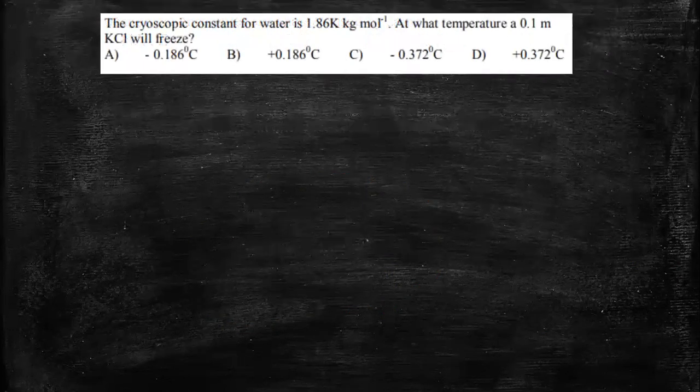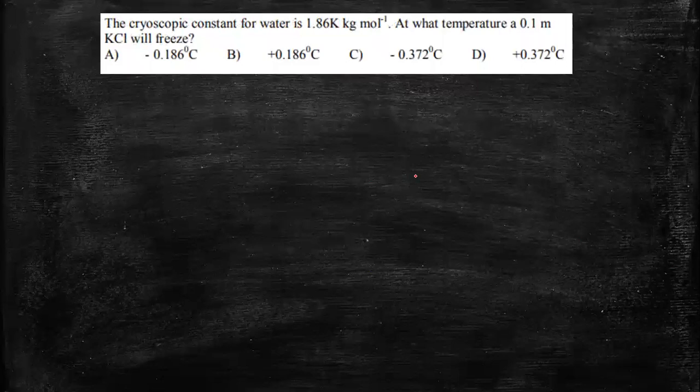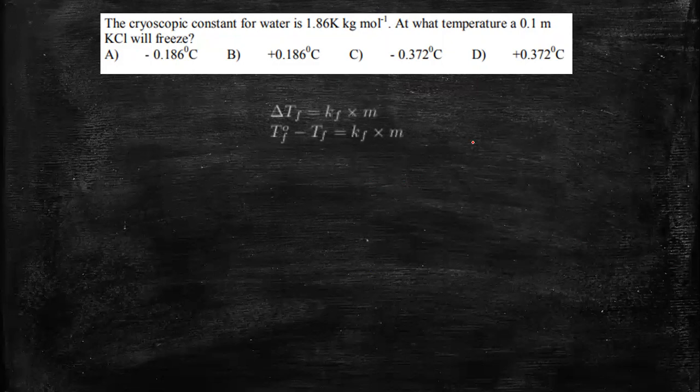Now let's move on to the next question. The cryoscopic constant for water is 1.86 K kilogram per mole. At what temperature will 0.1 molar KCl freeze? So initially, this is cryoscopic constant and we need to look at the particular formula delta Tf equal to Kf into M.